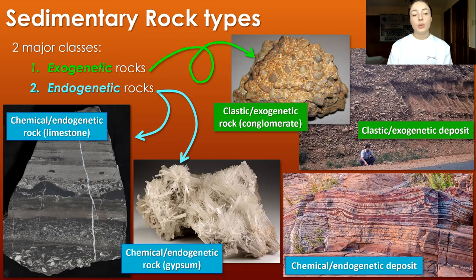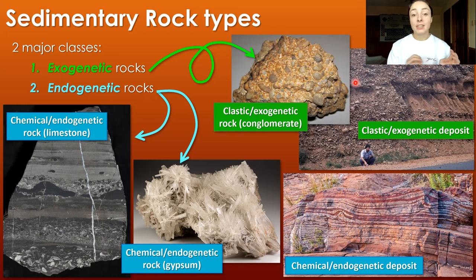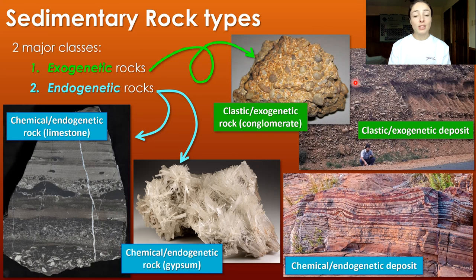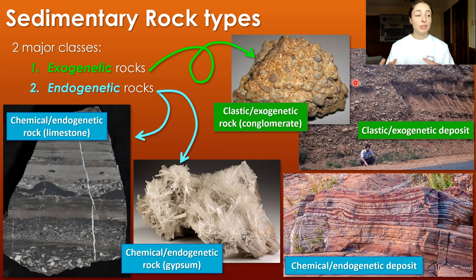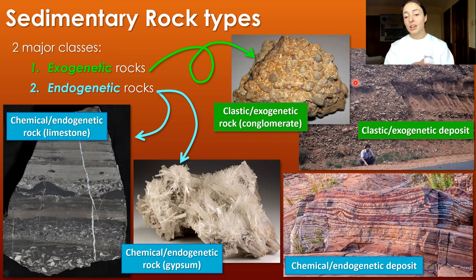Exogenetic rocks include things like clastic conglomerates, which contain gravel, pebbles, and cobbles — we'll explain those grain size terms in the very next video. Basically it has clasts from previous rock fragments, which defines it as exogenetic. We call it clastic or detrital because it has clasts and they weren't formed where they accumulated — they were transported there. The word detrital means the rock contains detritus, similar to saying it contains clasts of previous rock fragments transported and accumulated at the bottom of whatever basin they ended up in.